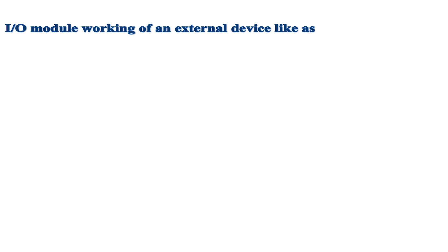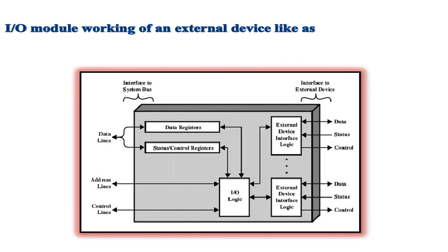The input-output model working of an external device involves the following components. One: control signals. The various control signals are sent via control buses to the external device to determine the function to be performed. Two: data buses. These contain the set of data bits to be sent or received from the peripherals. Three: status signal. It indicates the status of the device. Four: control logic. It controls the device's operations.